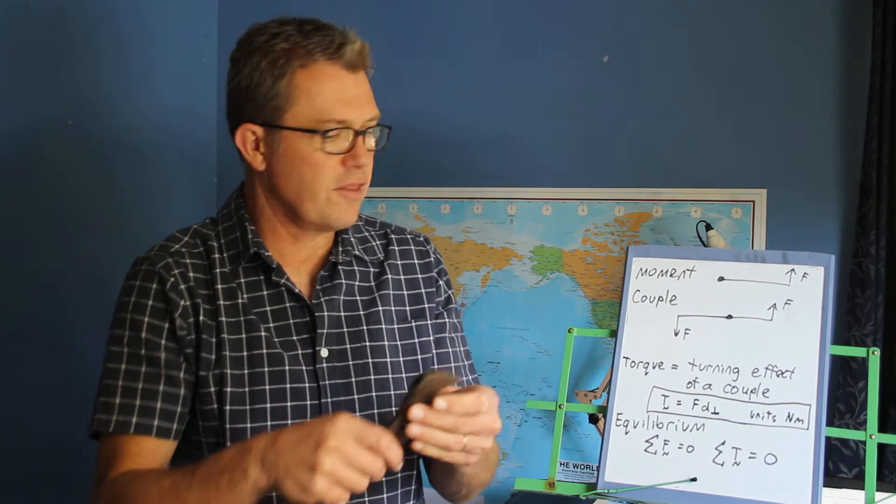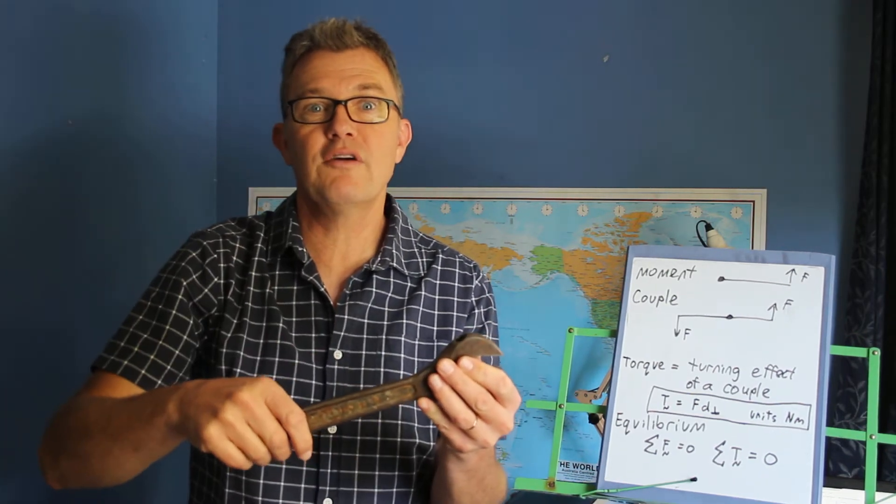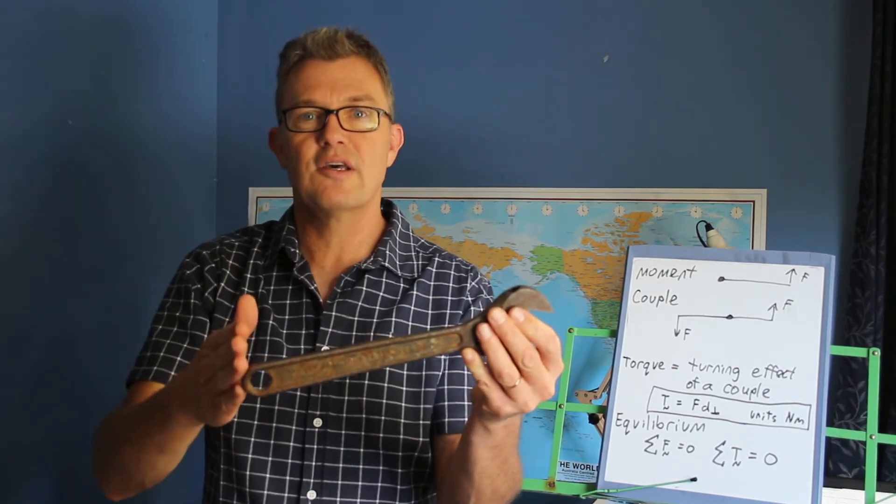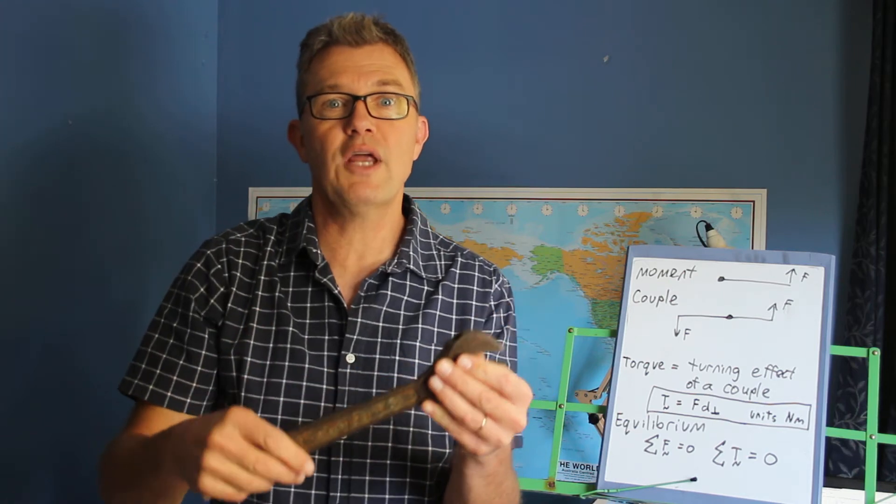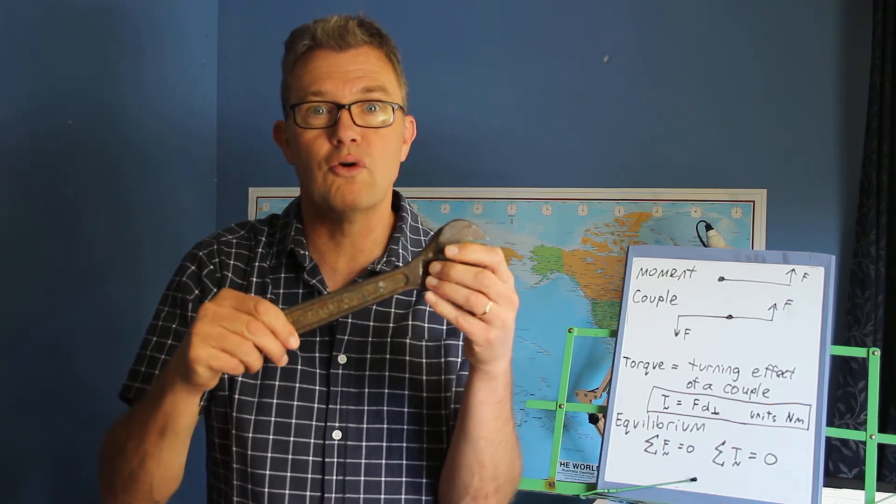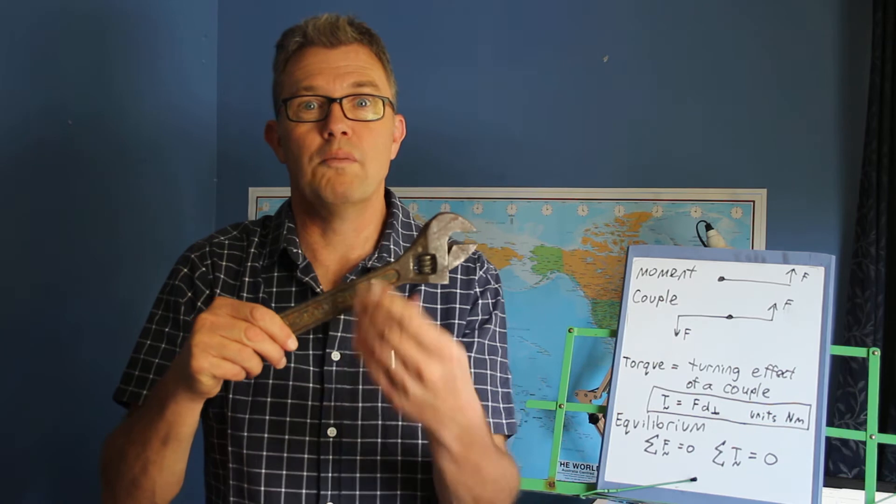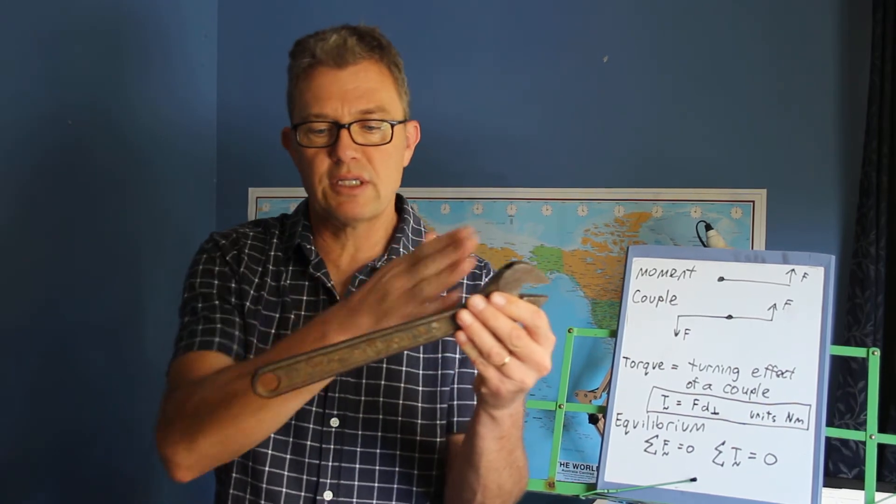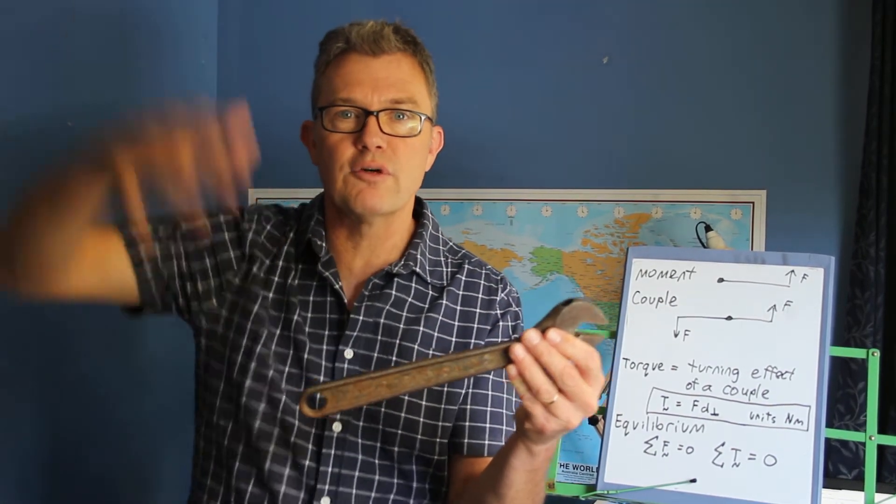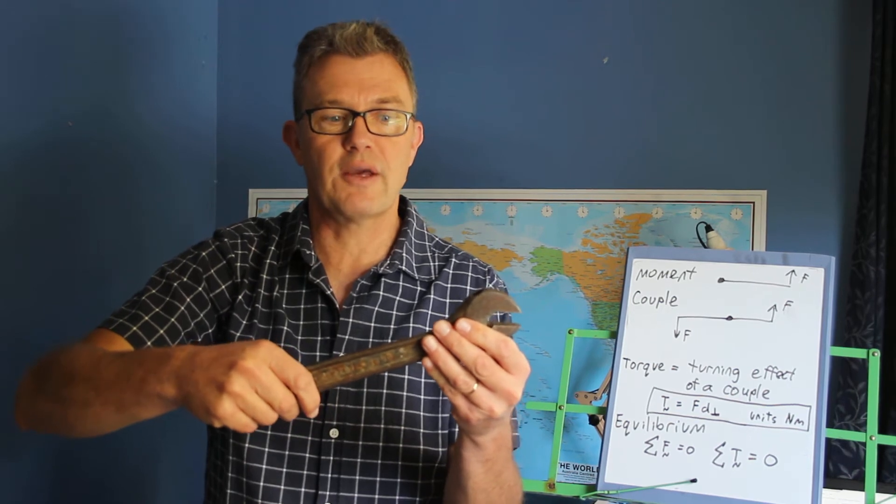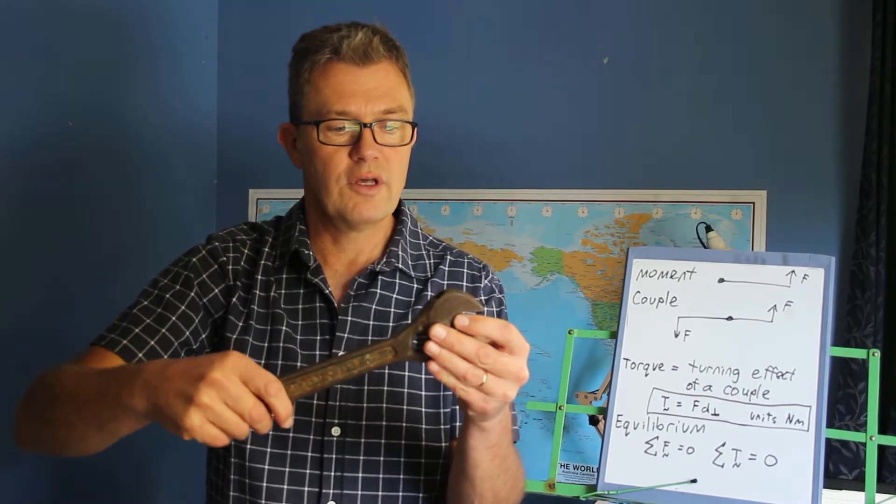So the bigger the force, the bigger the turning effect, but also the bigger the distance, the bigger the turning effect. So if you want to have a really huge, enormous torque or moment, you need to have a big distance, and you need to have a big force, and then you can turn just about anything. If you have a small force over a small distance from the pivot, very little torque, not much torque at all.